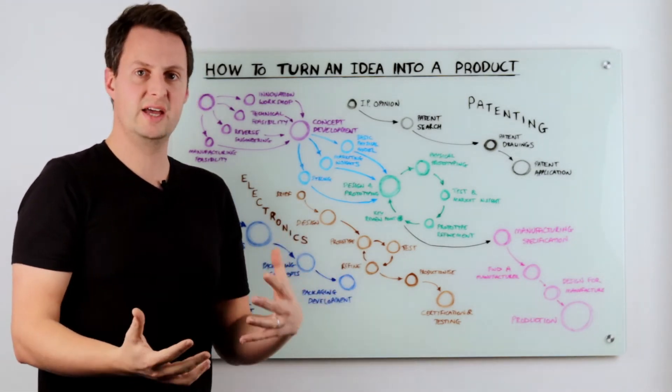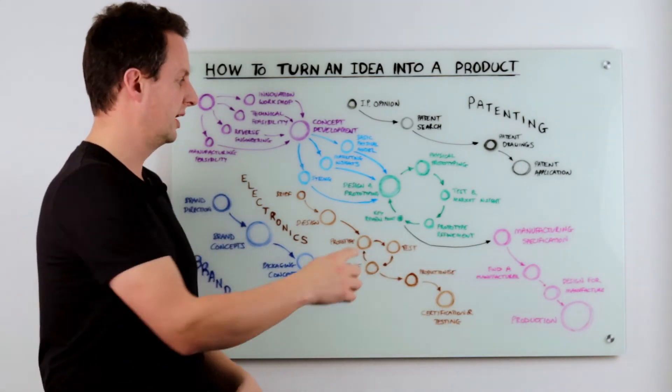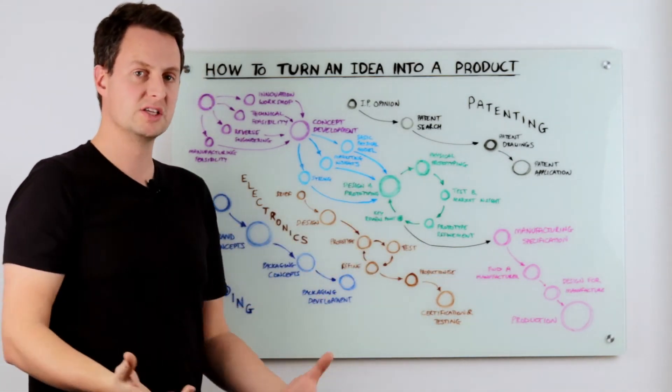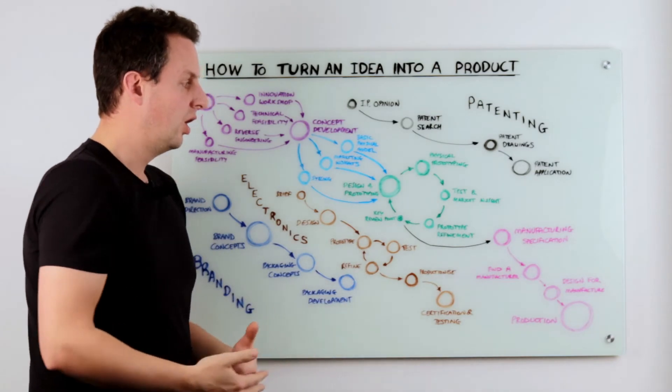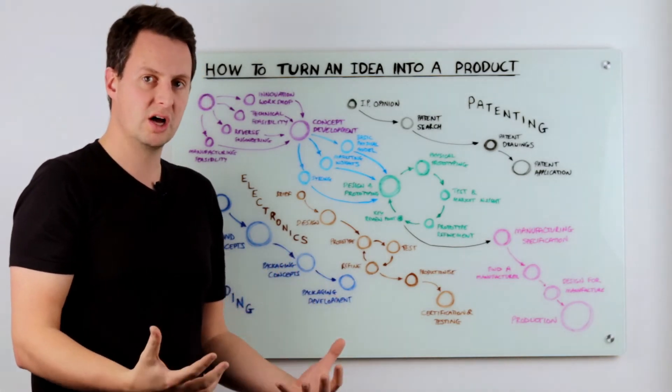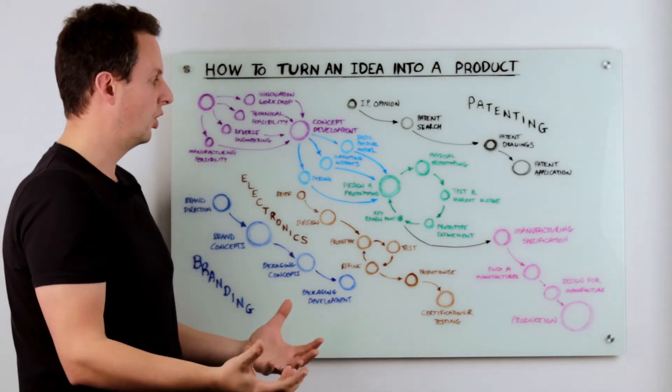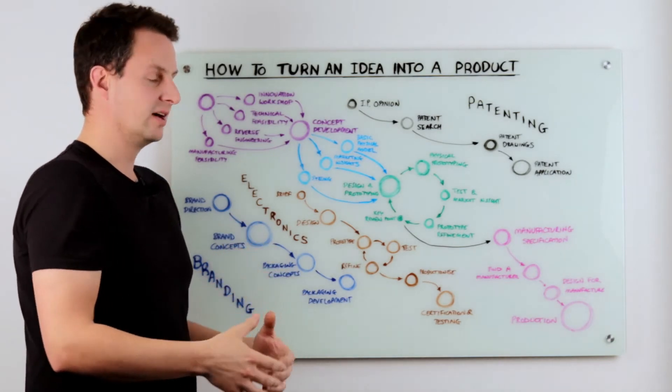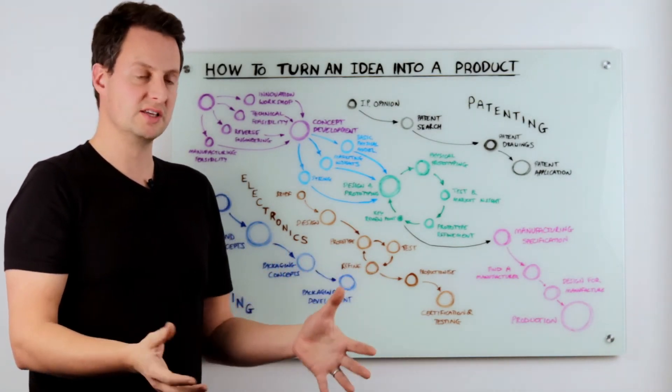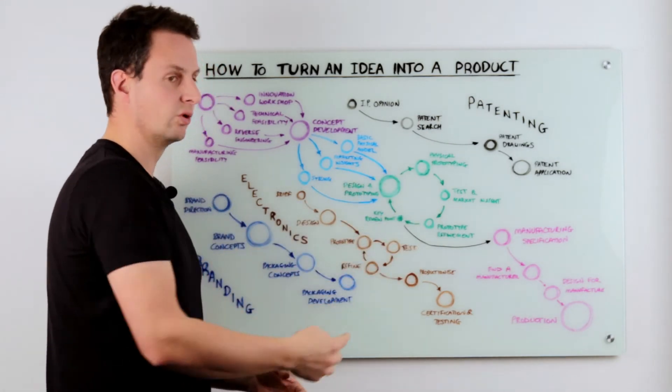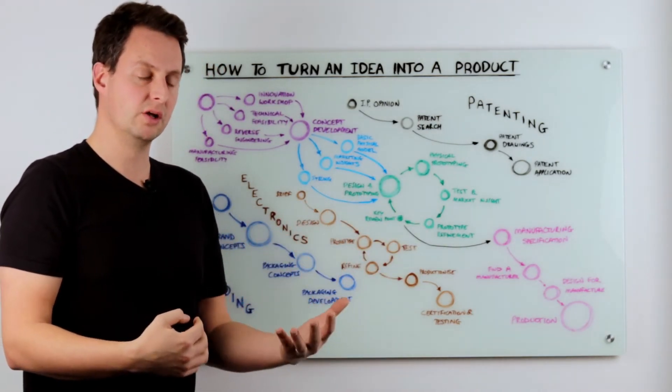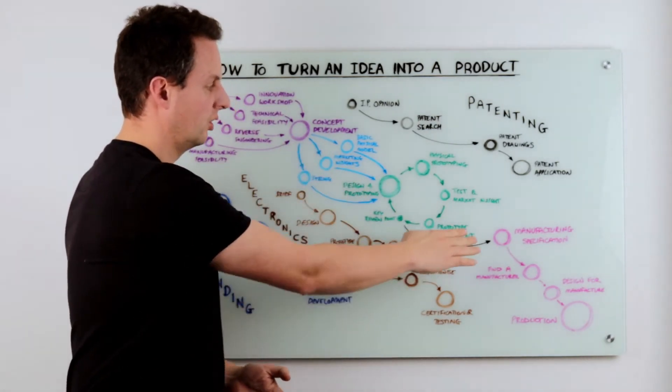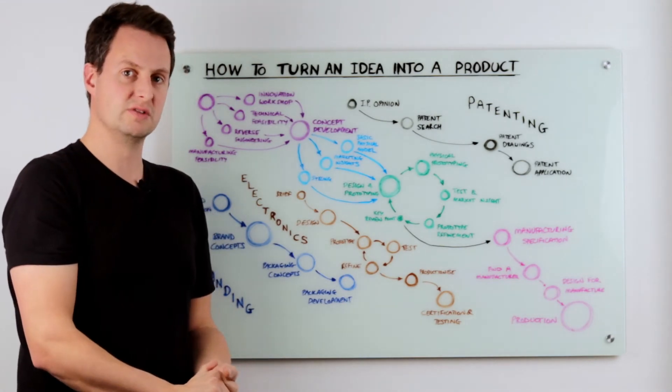Some companies go through 10, 12, 20 even loops around this process to refine their product before they move it forward. Often if you're a small start-up business, you haven't got the budget to be able to do that. So you're going to want to work with a design agency that works very efficiently so you can get this done maybe in two or three iterative development loops and then you can crack on with getting into the final stages of development.